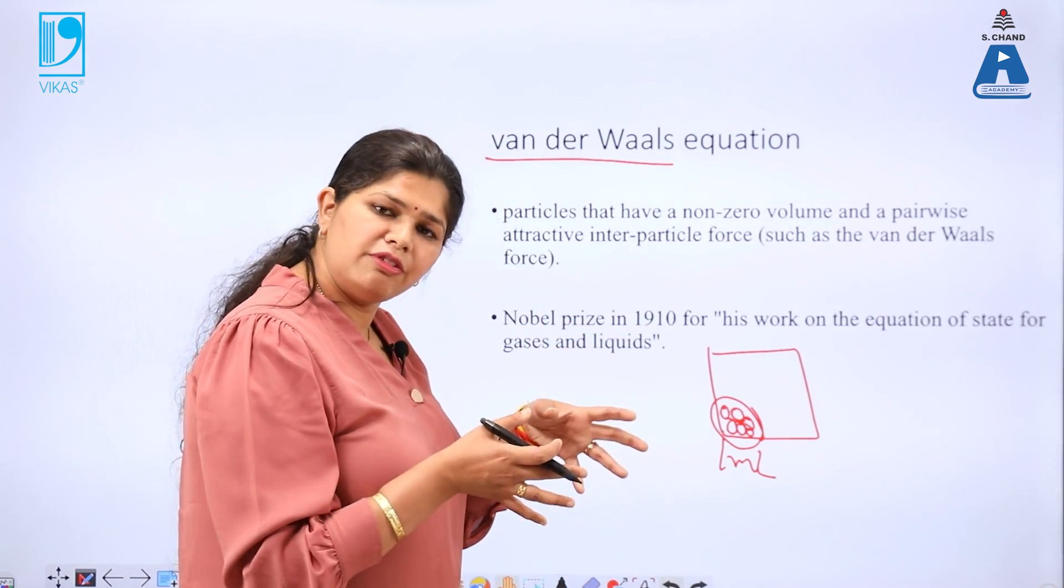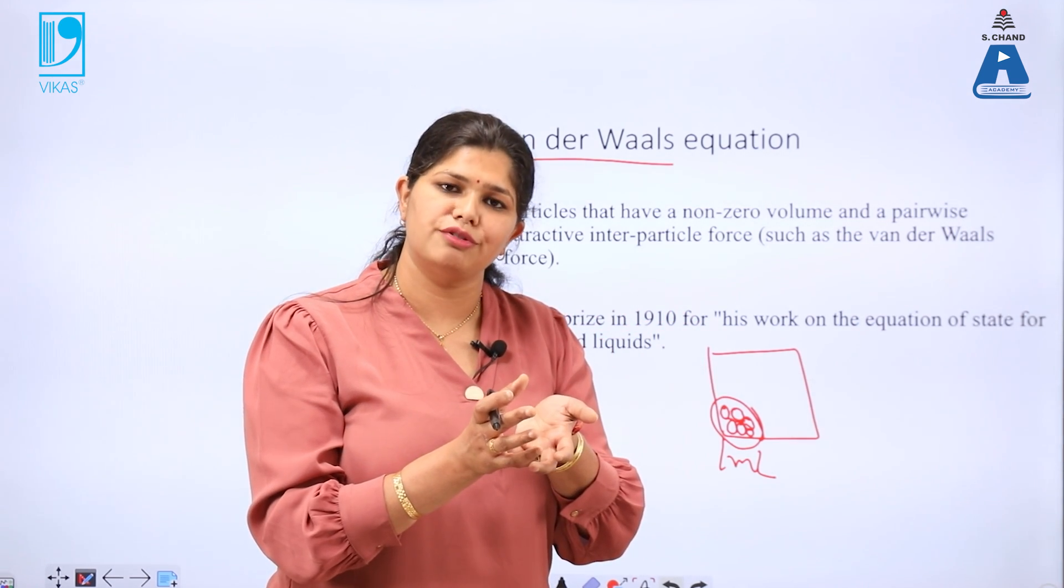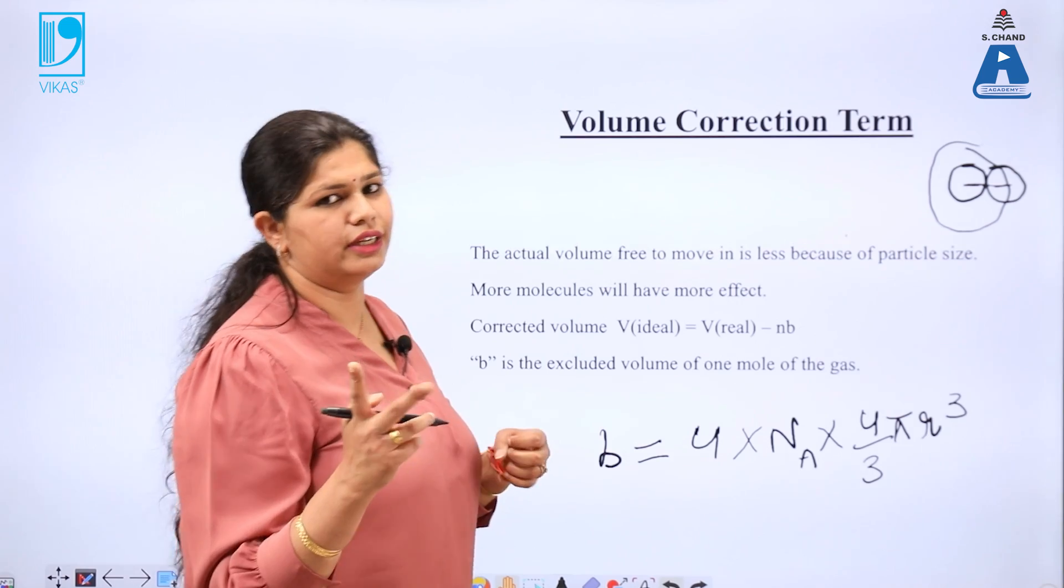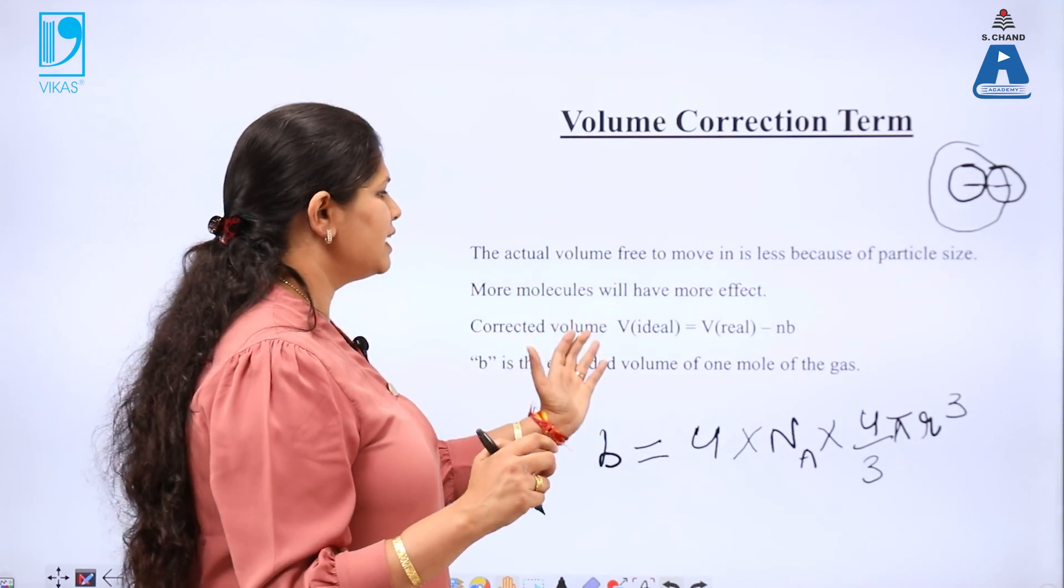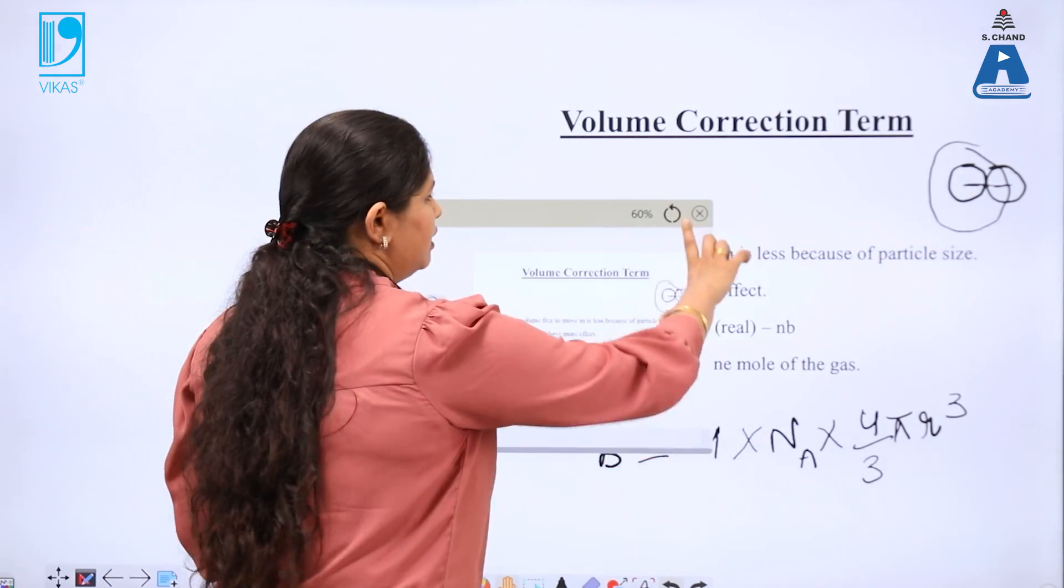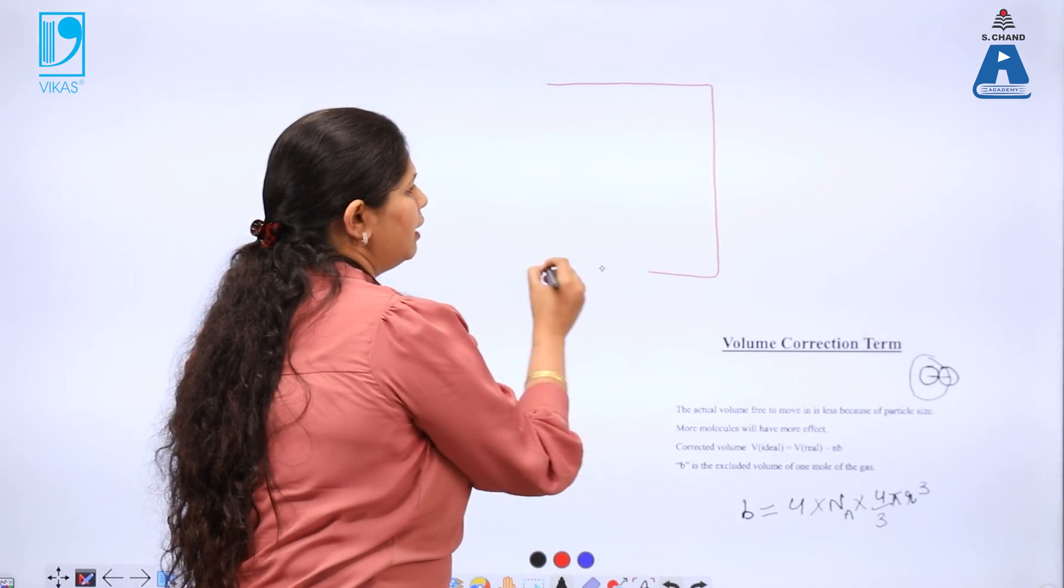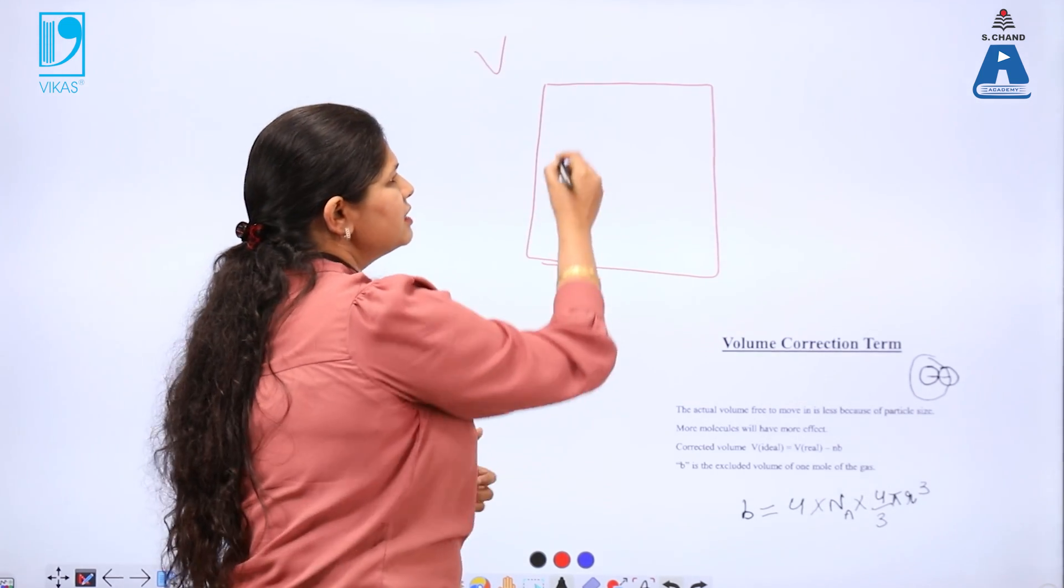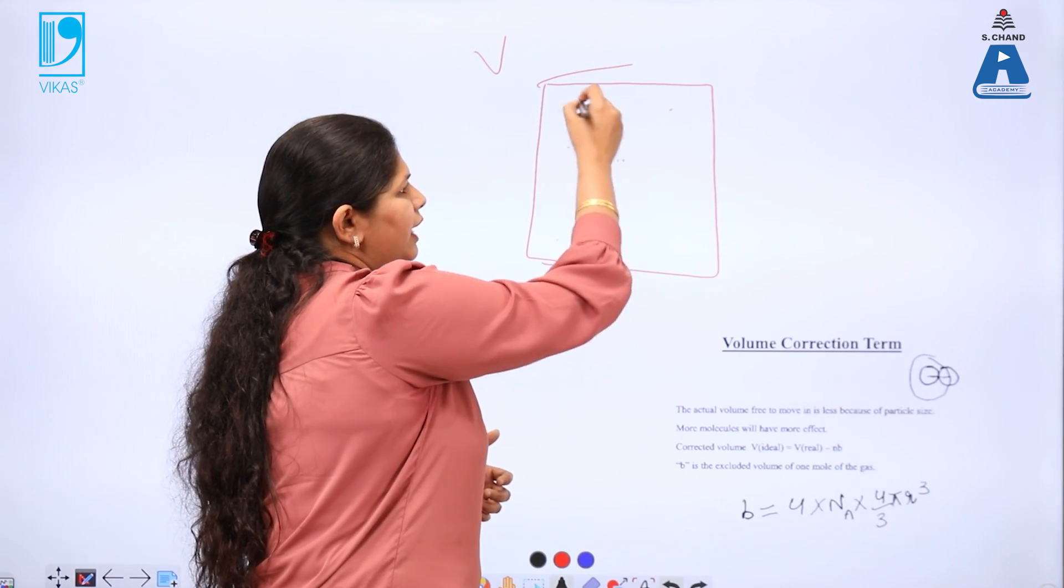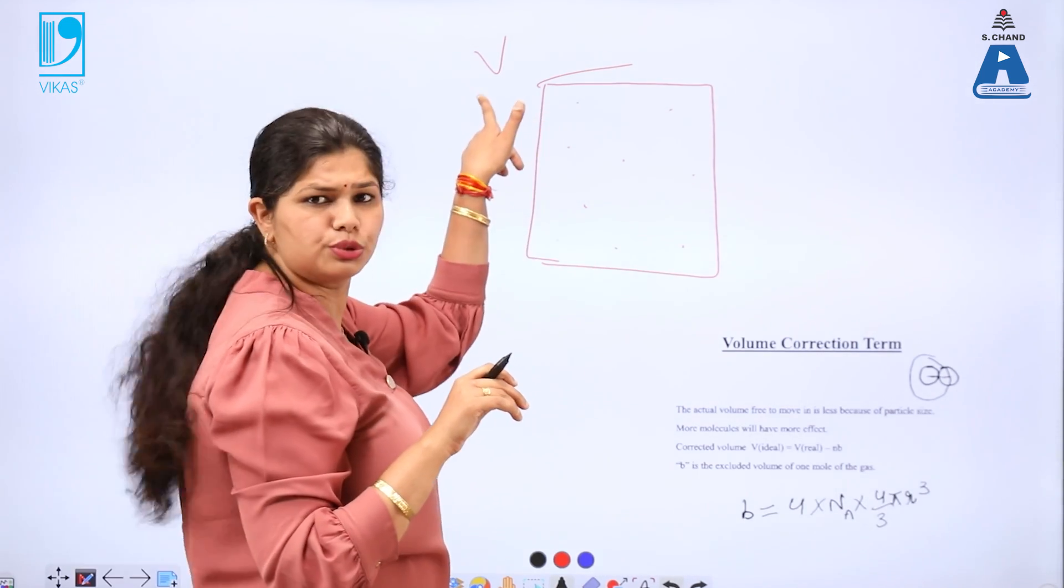Second, as they are liquefying, we have to say that there is existing certain molecular forces of attraction and therefore, two correction terms: one is volume correction. Volume correction is what? The ideal gas volume V is the volume of this entire space which the gaseous molecules are taking to move around. This is the volume of the container which we use in the ideal gas equation.